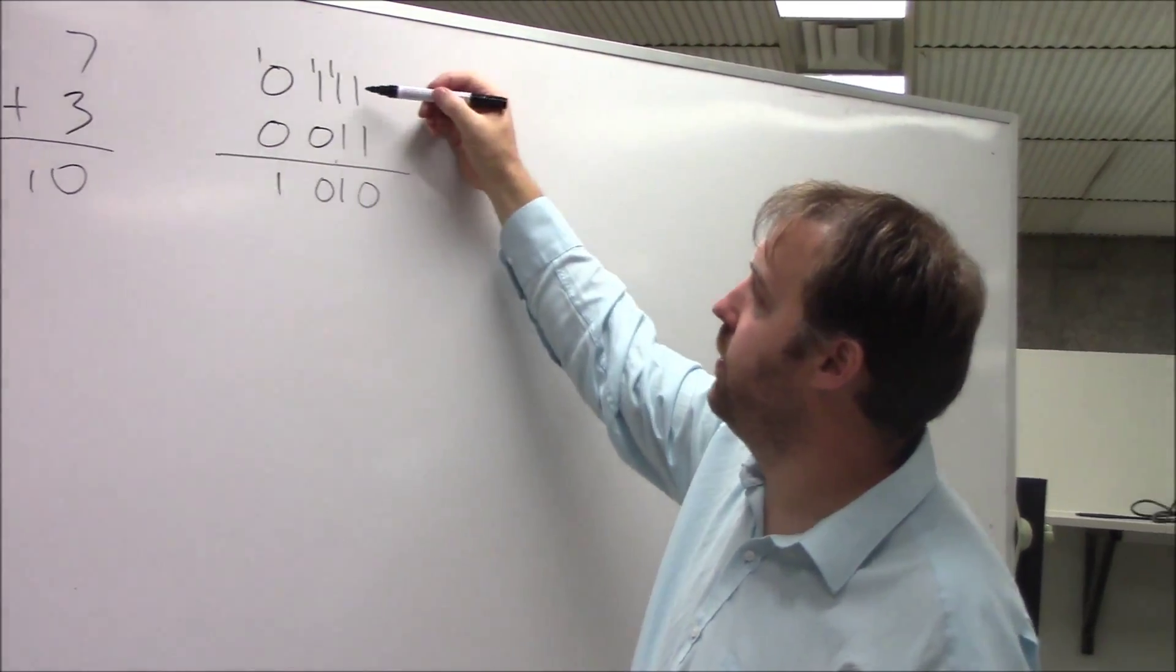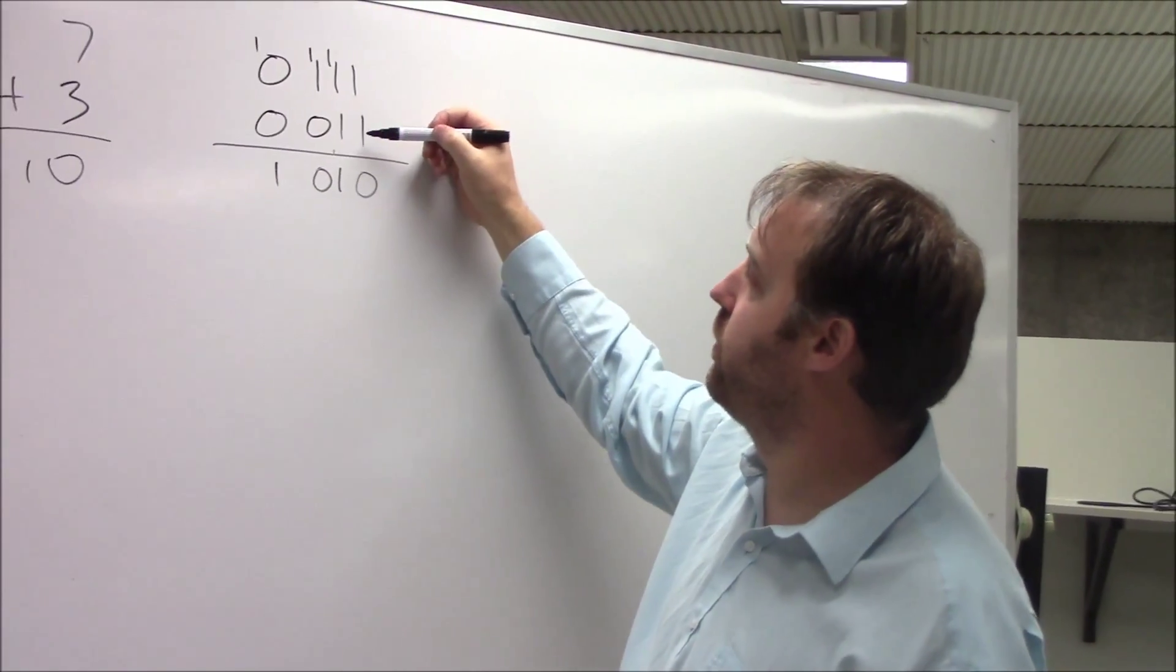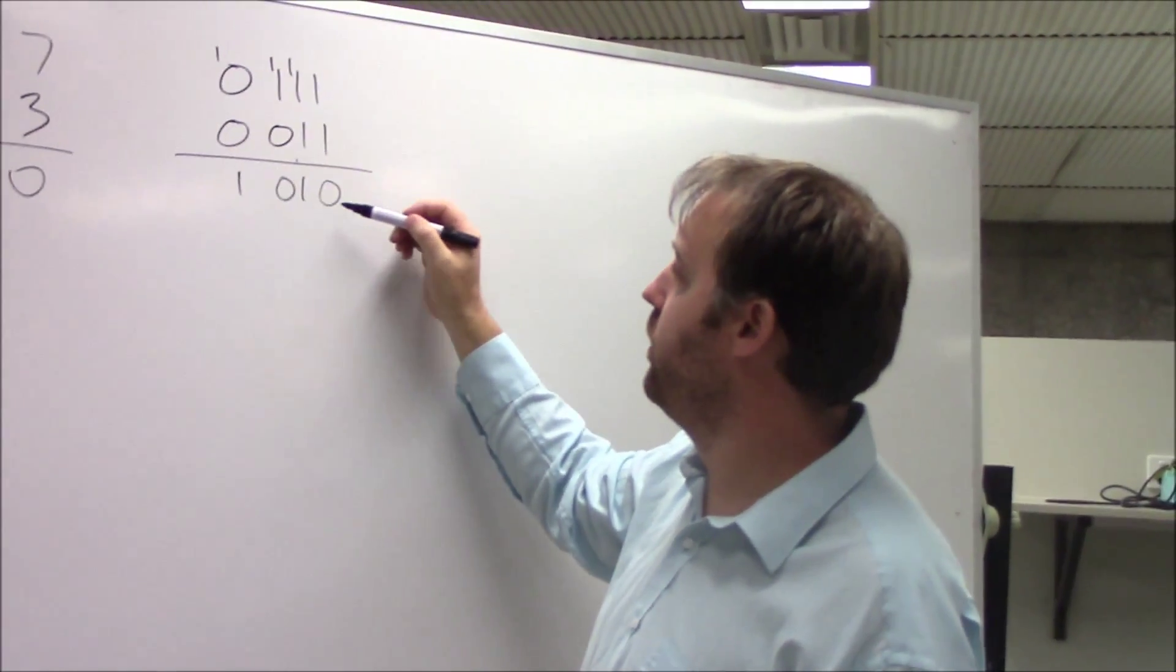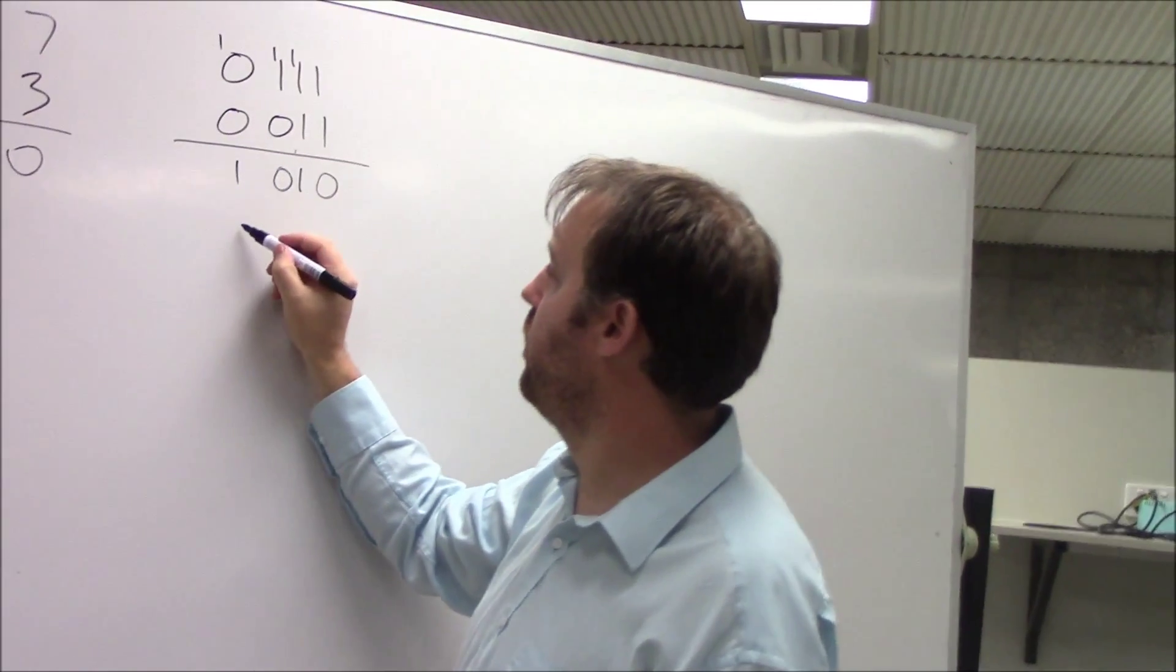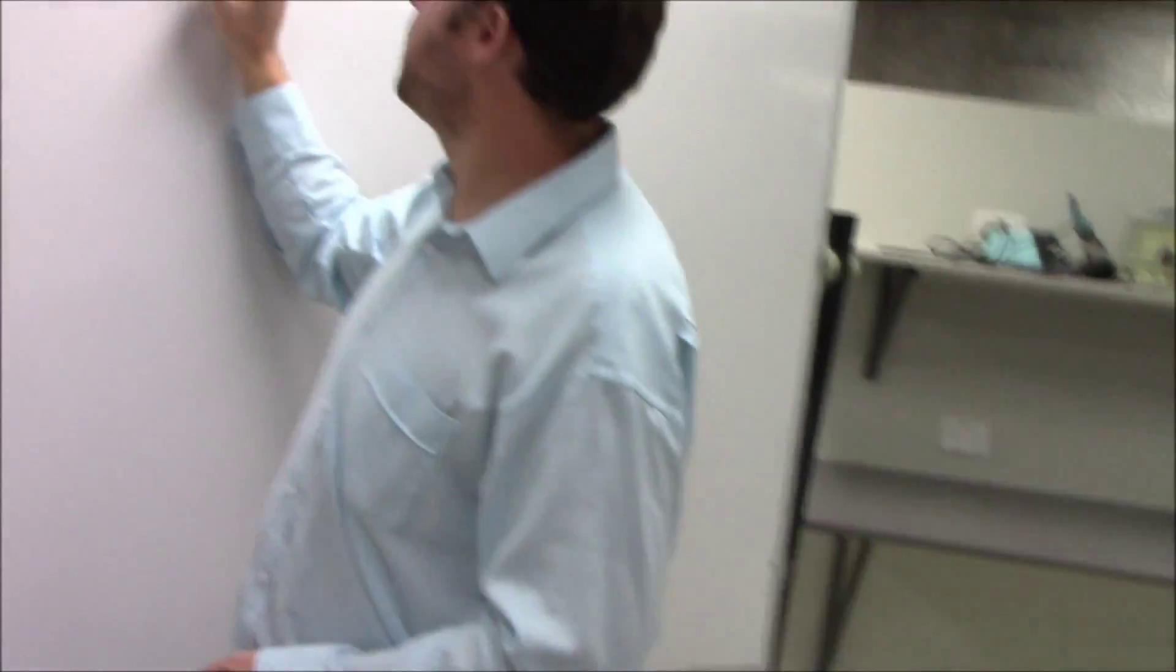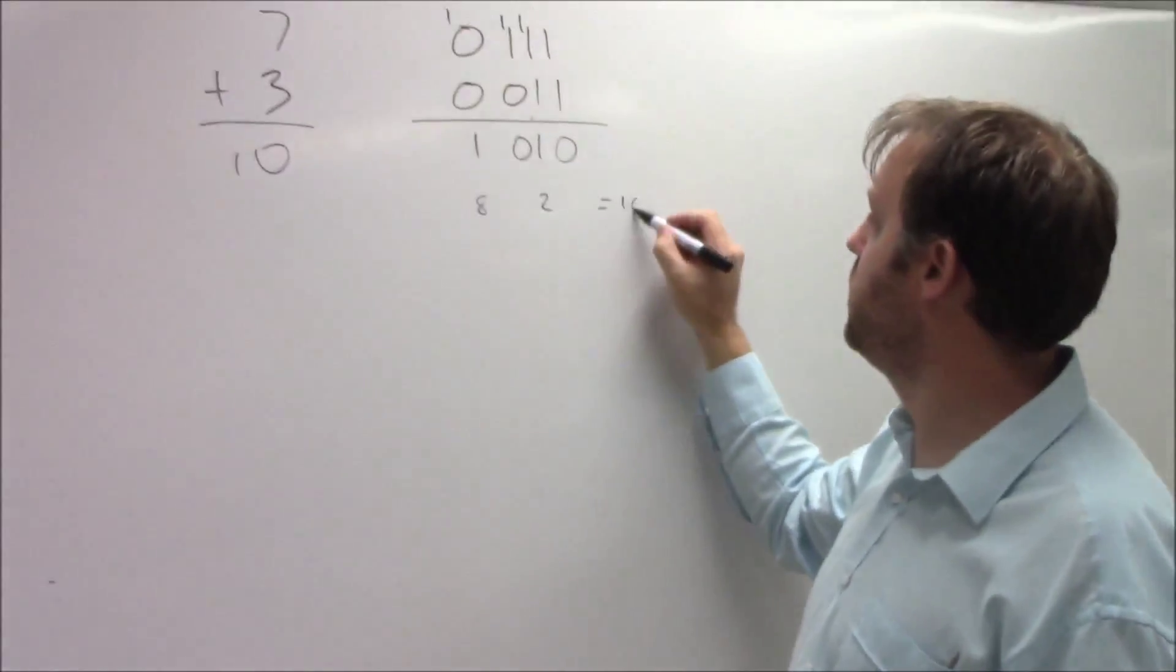And we can see that the answer to adding binary 7 to 3 gives me 1, 0, 1, 0, which is, we've got an 8 plus a 2, which is 10.